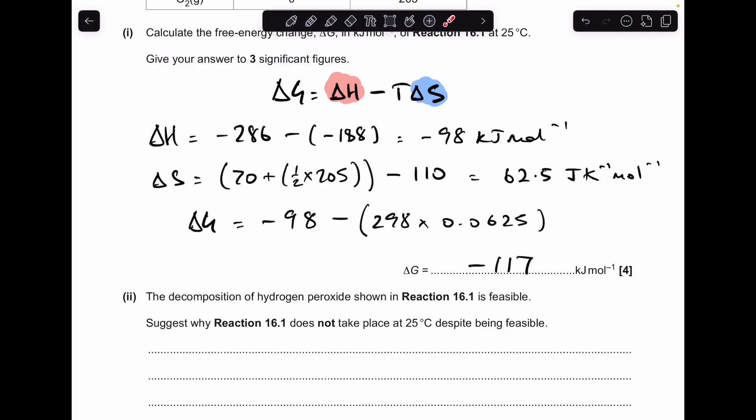So ΔG = -98 minus, so T is 298 kelvin, 25 degrees C, times that ΔS put in kilojoules per kelvin per mole. And the answer's coming out at -117.